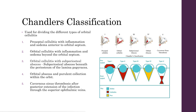Classification 1 is preseptal cellulitis with inflammation and oedema anterior to the orbital septum. Moving on to the different classifications of orbital cellulitis, this is 2 through 5. The simplest form is type 2, which is inflammation behind the eye or cellulitis behind the eye. In type 3, you get a collection of pus or subperiosteal abscess between the periosteum and the lamina papyracea. In type 4, you've got a collection of purulent material behind the orbit itself. And then finally, type 5 is when you develop a cavernous sinus thrombosis as a result of posterior extension of the infection.